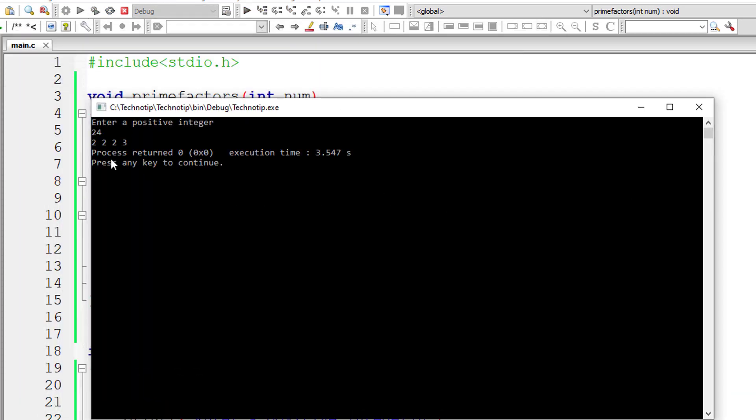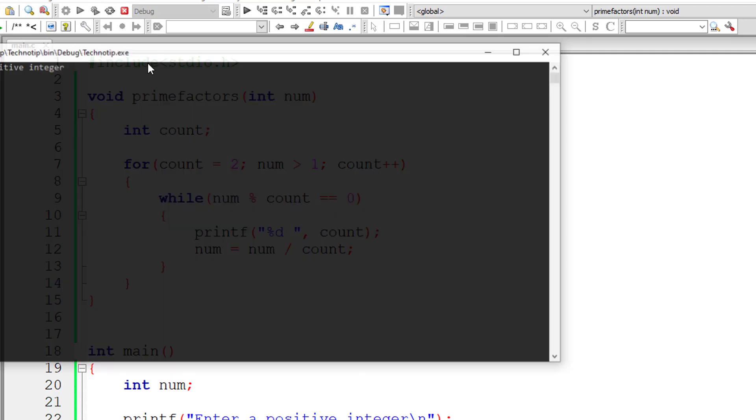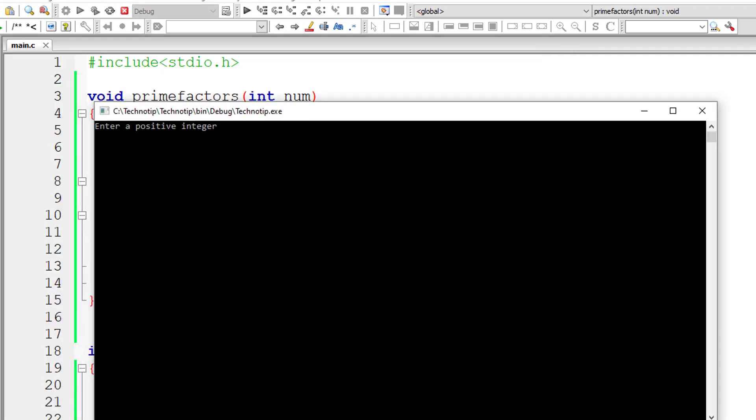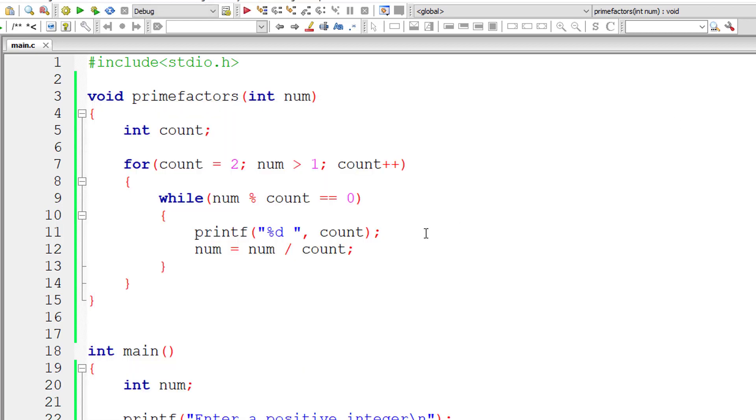So I'll give 24. So prime factors are 2, 2, 2 and 3. So 2 into 2 into 2 into 3 is 24. Let me give 35 now. So prime factors are 5 and 7, 5 into 7 is 35.